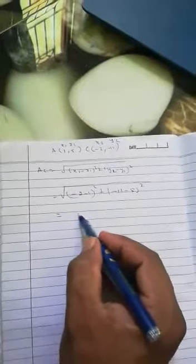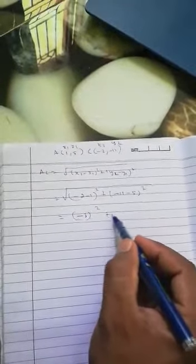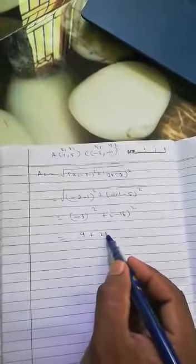So minus 3 whole squared and minus 16 whole squared. 3 squared is 9, 16 squared is 256.